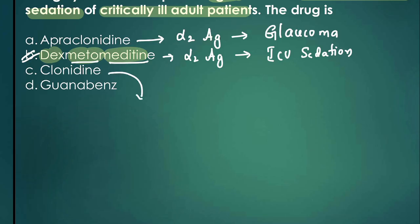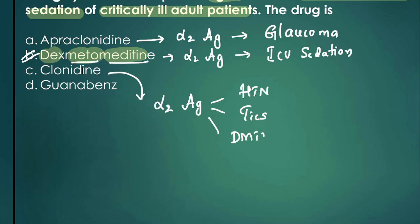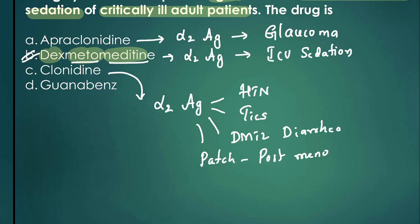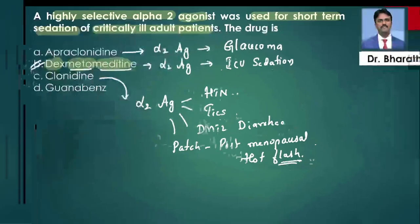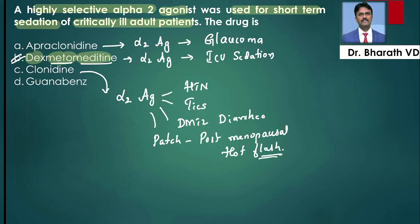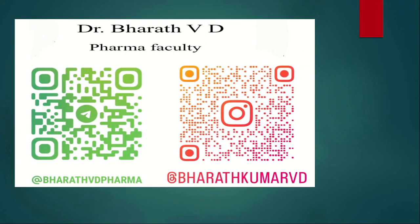Clonidine is also an alpha-2 agonist used to manage resistant hypertension, tics disorder, and diarrhea in diabetic patients. The clonidine patch is used for managing post-menopausal hot flushes. Guanabenz is also an alpha-2 agonist similar to clonidine. So the answer for this question is option B, dexmedetomidine. That concludes this short discussion — post any doubts in the comment section. Thank you, take care.